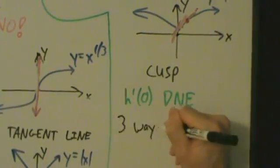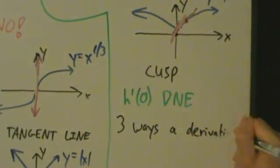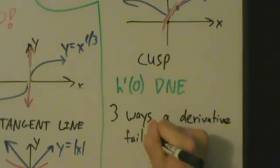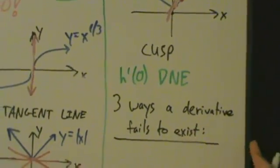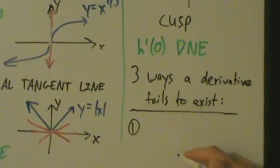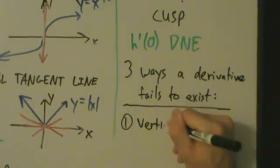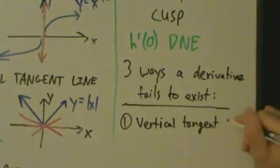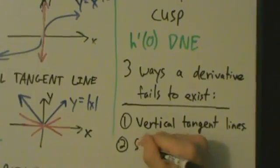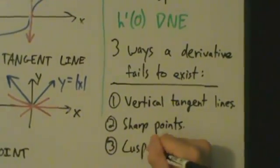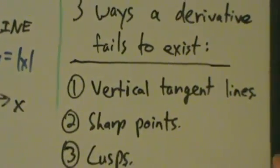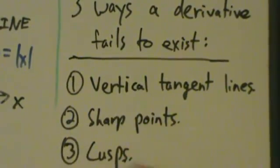Let's summarize the three ways a derivative fails to exist. One: vertical tangent lines — if you have a vertical tangent line, the derivative will not exist there. Two: sharp points, like in the absolute value function. Three: cusps, like in x^(2/3). So if you have a vertical tangent line, a sharp point, or a cusp, then your derivative is not going to exist there.